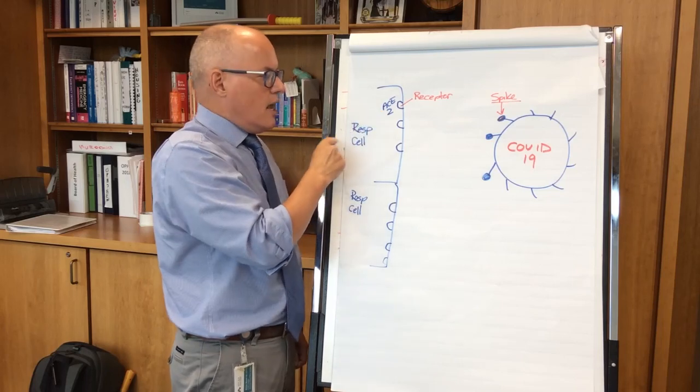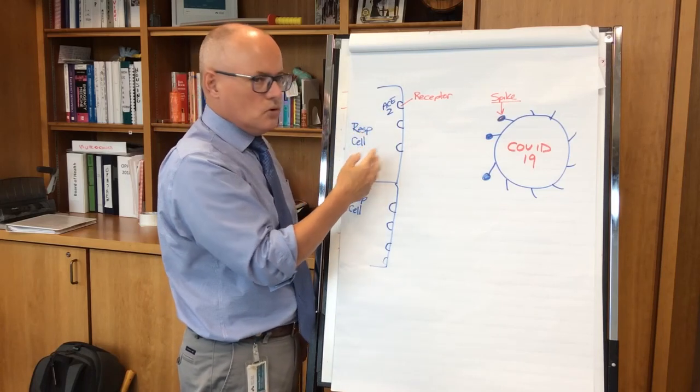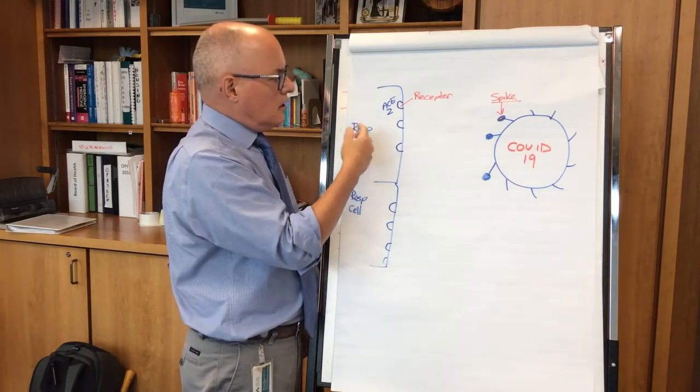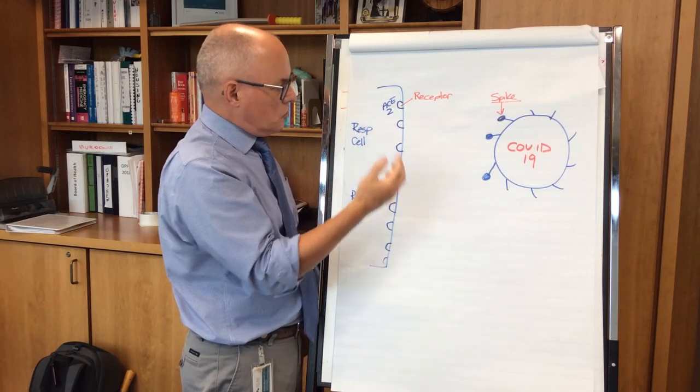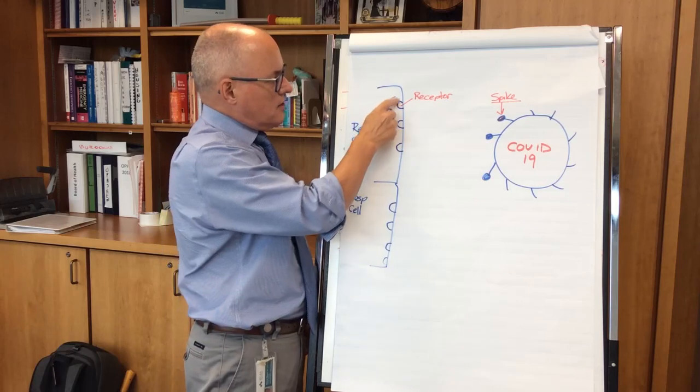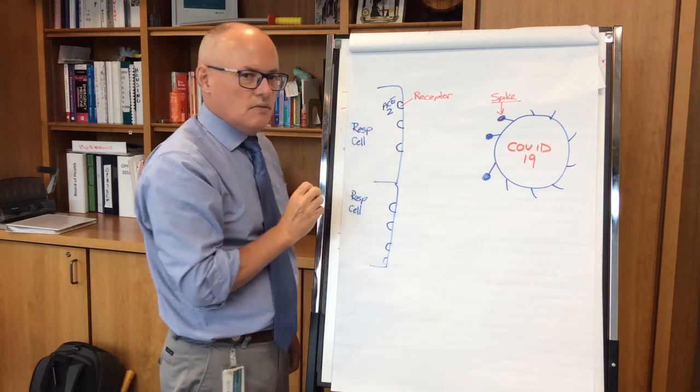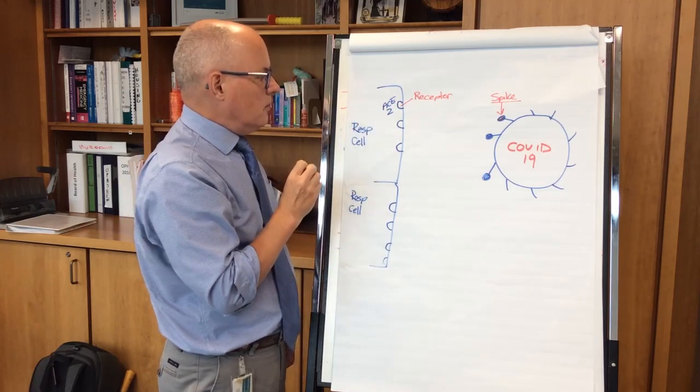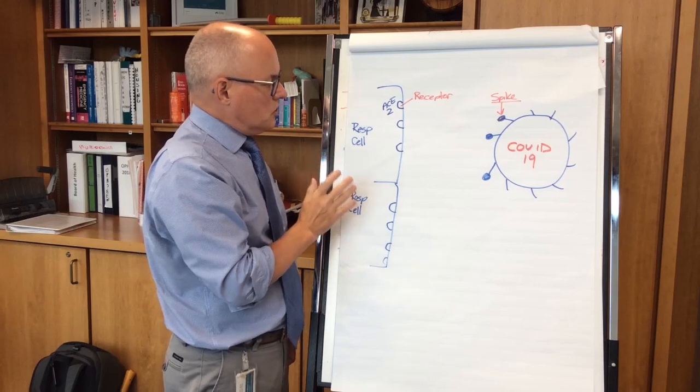Children under 10 are less prone to severe symptoms and less prone to transmitting the virus. That's the theory at present - it makes sense if there are different densities of this receptor for the virus in adults versus children under 10.